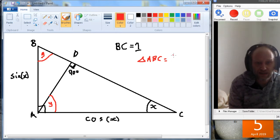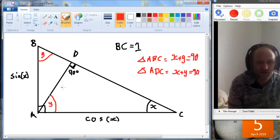And in the triangle ADC, this triangle, again we've got a 90 degree triangle, so we know that X plus Y equals 90. So these Y's must be the same, basically.